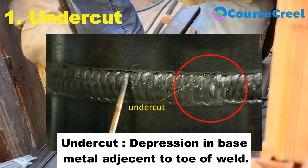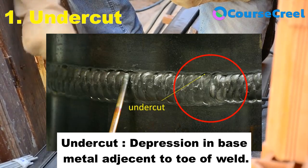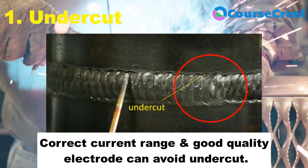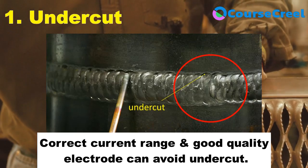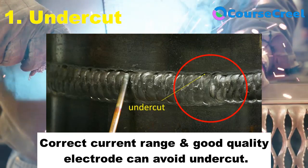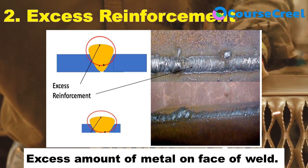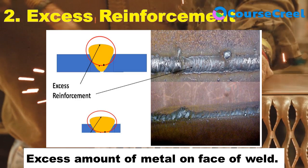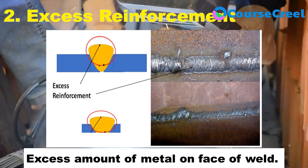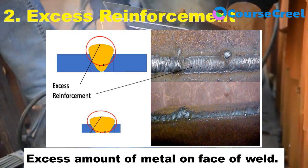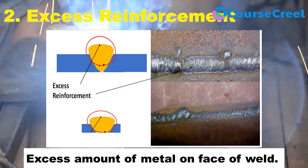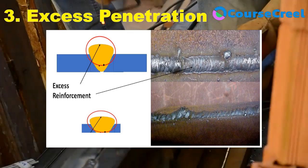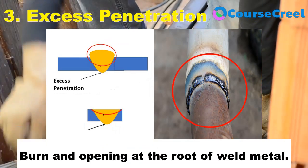Undercut is classified as a geometric defect, and its main cause is fatigue cracks. To avoid undercut, we should concentrate on correct current size, good quality electrode, and proper electrode manipulation. The next type of geometric defect is excess reinforcement, which is associated with an excess amount of weld metal. If the metal on the face of the weld is in excess, it is considered excess reinforcement, and necessary care must be taken by the welder to avoid it.